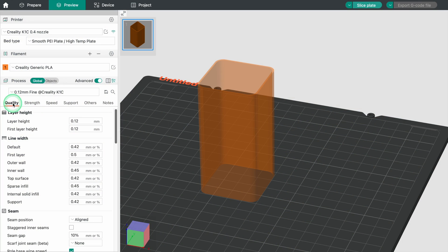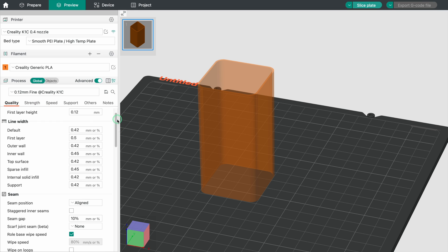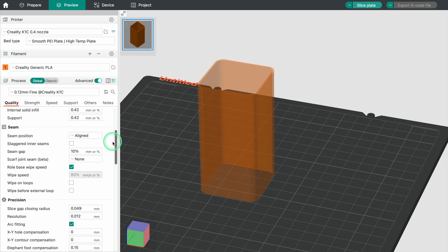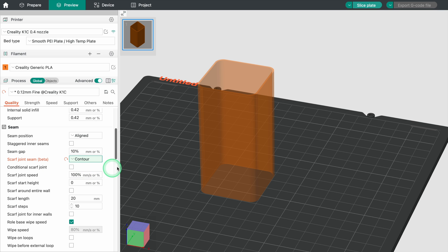You can find the setting for the scarf joint seam under the quality settings in Orca Slicer. As soon as you activate the new feature new settings will appear with which you can further customize the seam.